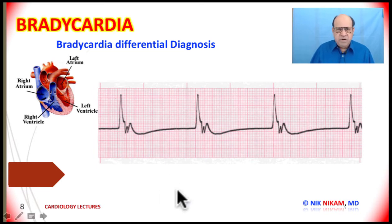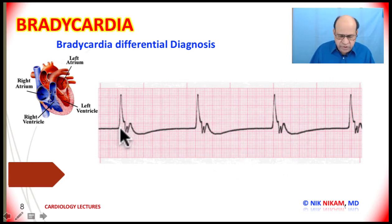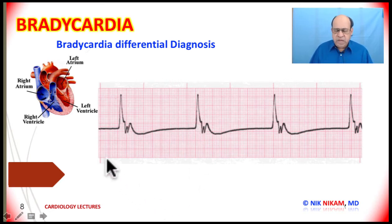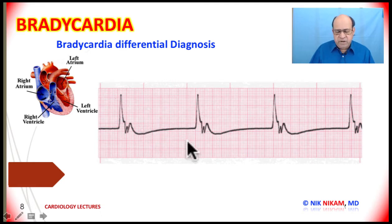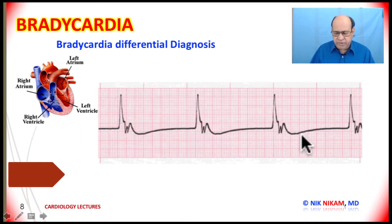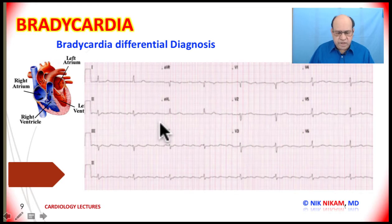What is your diagnosis here? The rate is slow — bradycardia. We have a wide QRS complex of 160 milliseconds. There is a little notch which may be a retrograde P wave. With a wide QRS bradycardia, this is most likely idioventricular rhythm with retrograde atrial activity.